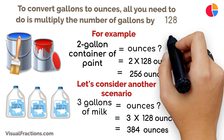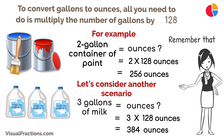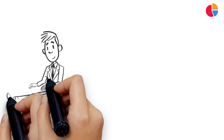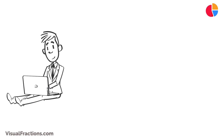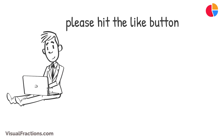And there you have it — converting gallons to ounces is a simple process. Remember that one gallon equals approximately 128 ounces. With a bit of practice, you'll become skilled at making this conversion, allowing you to work with different volume units more effectively.